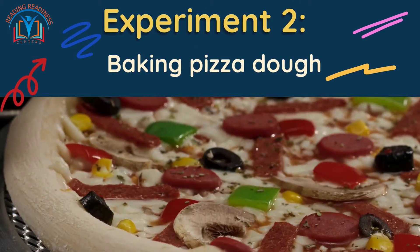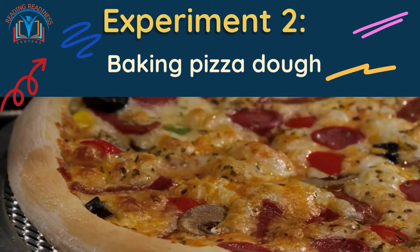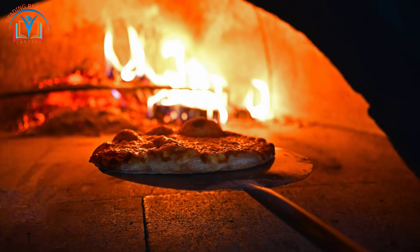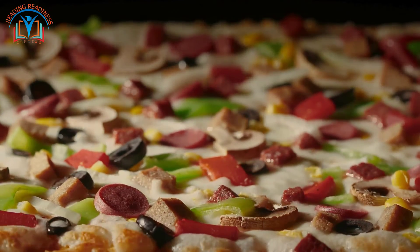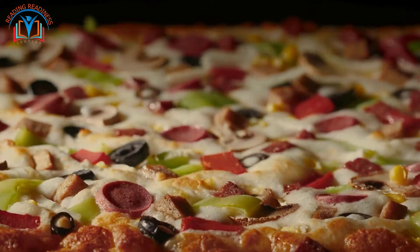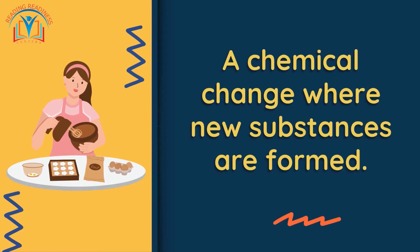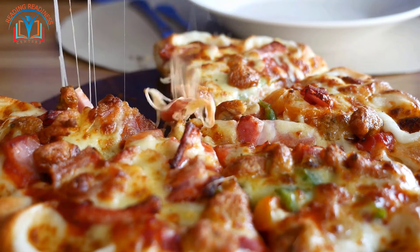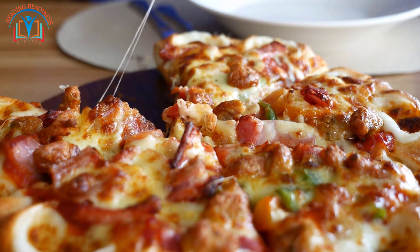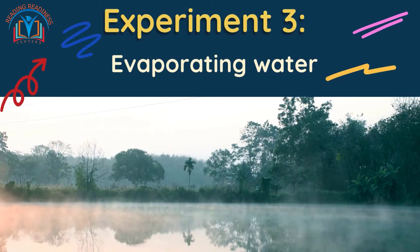Experiment two: baking pizza dough. Now let's explore what happens when we heat pizza dough. The dough, a soft solid, transforms into a golden crispy crust. This is baking — a chemical change when new substances are formed. The heat breaks down the dough's molecules and creates new ones, giving us the delicious pizza we all love.